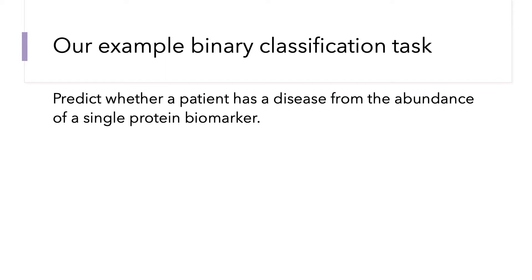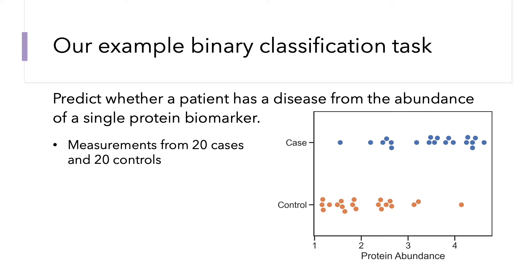We're going to try and predict whether a patient has a disease from the abundance of a single protein biomarker. We're going to pretend that we have measurements from 20 disease cases and 20 control samples. This is what our data might look like, where the blue dots are our disease cases, the orange dots are control cases, and their location on the x-axis indicates the protein's abundance. In general, the data looks like if you have a higher protein abundance, it's more likely to be a disease case than a control.